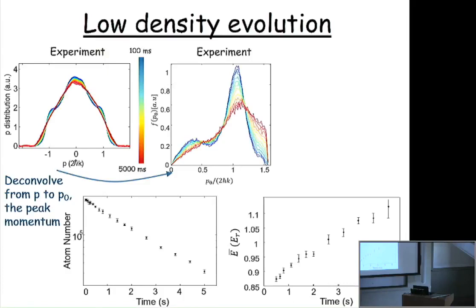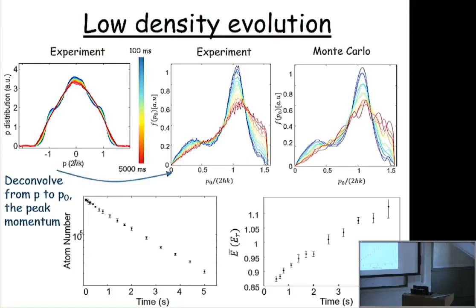Looking at the low-density evolution: the momentum distribution goes from blue to red over time, changing only a little under these circumstances. We deconvolve that momentum distribution to get the distribution of peak amplitudes, which shows more clearly the non-thermal shape starting from the Newton's cradle excitation with a central peak, gradually evolving over time. We track atom number and energy as a function of time. The cutoff at high momentum is because the trap has a sharp edge — high-momentum atoms simply escape. The Monte Carlo result for the loss matches the data: the loss is due to spontaneous emission leading to heating, and the heating comes from those transverse excitation processes.